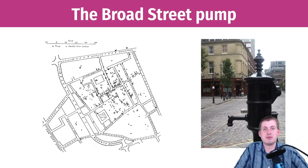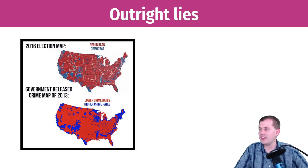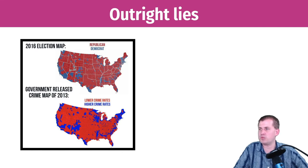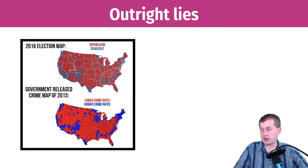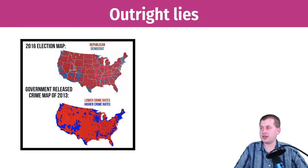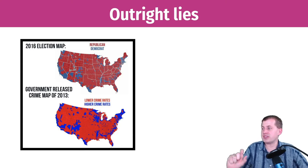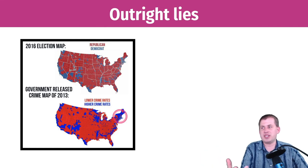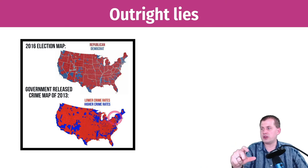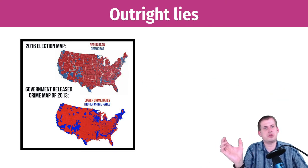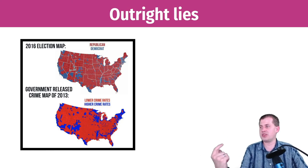The problem is that maps can also be used in the opposite direction. This map started getting shared among right-wing social networks immediately after the 2016 election — including by older relatives of mine — to show the relationship between the distribution of Democrats in the country and crime rates. By showing this, they're arguing Democrats are criminals: look at these high crime rates, and that's where the Democrats are, therefore there's a clear connection between crime and political party.